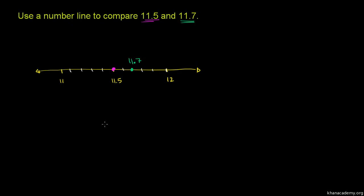And the way we've drawn our number line, we are increasing as we go to the right. 11.7 is to the right of 11.5. It's clearly greater than 11.5.